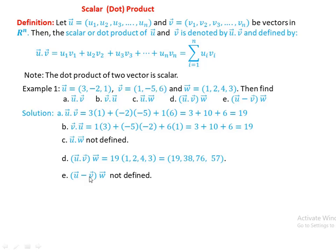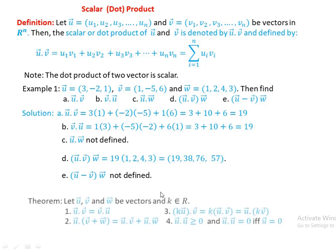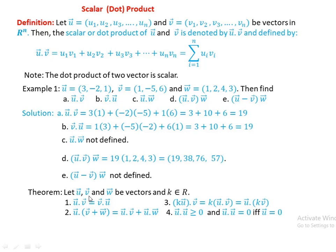Now let u, v, w be vectors and k be a scalar. The properties of the dot product are: (1) u·v = v·u; (2) u·(v + w) = u·v + u·w; (3) k(u·v) = (ku)·v = u·(kv); (4) u·u is always greater than or equal to 0, and u·u = 0 if and only if u is the zero vector.